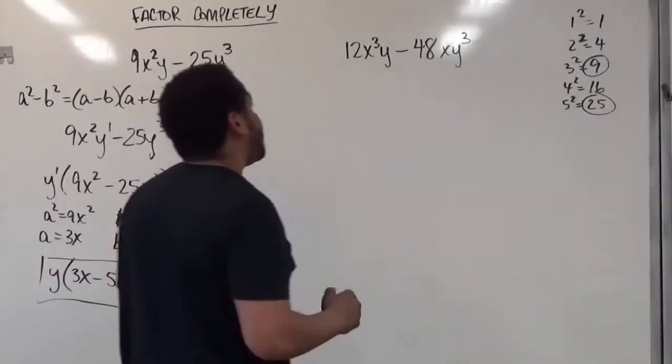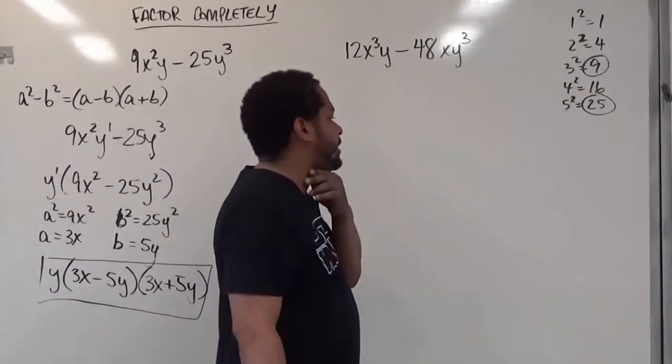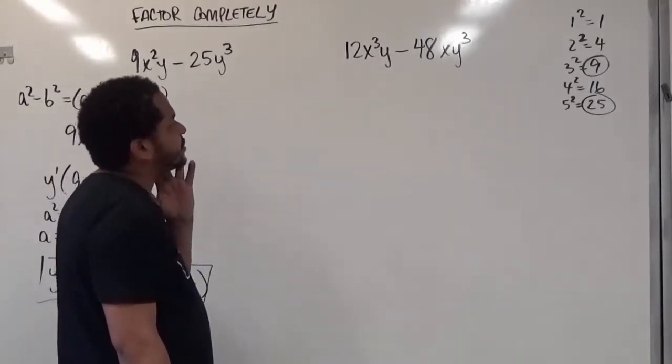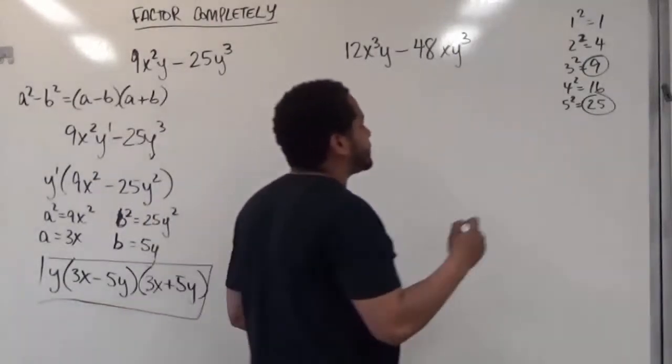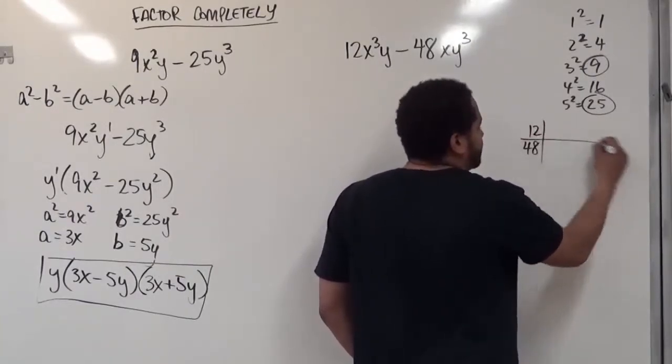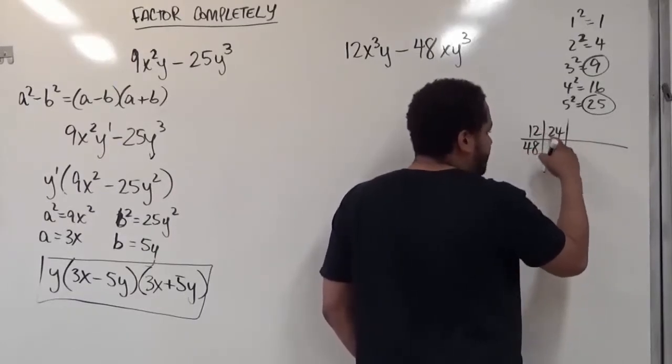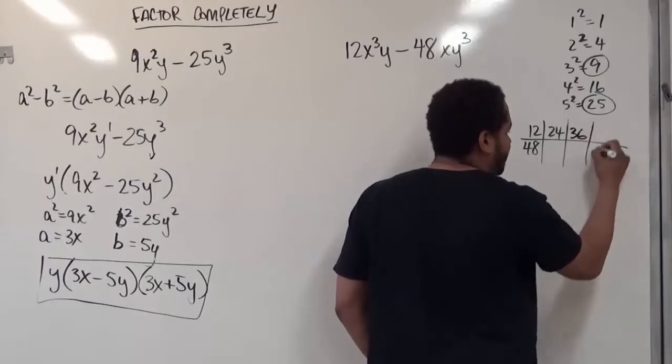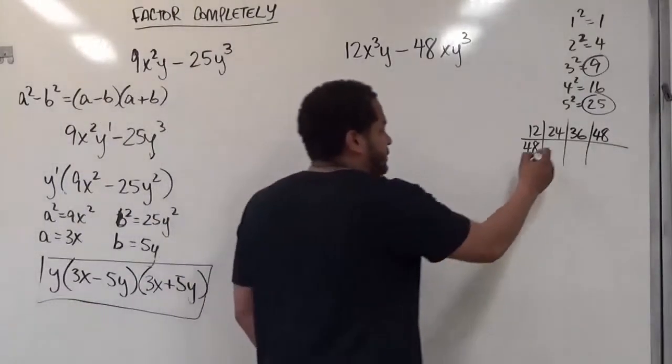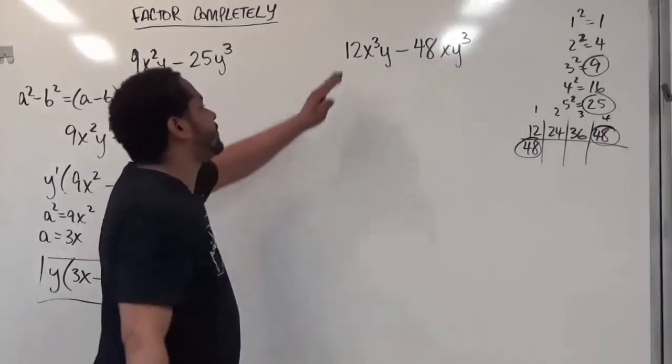My next piece here has both a variable and a number in common. So we're going to first look for the GCF within the numbers. When we look at the numbers, we have to consider what numbers make both 12 and 48, so we can extract the largest of these numbers. When I look at 12, I'm looking for all the numbers 12 makes, as well as 48. 12 by 1 is 12, 12 by 2 is 24, 12 by 3 is 36, and 12 by 4 is 48. So I know they both have 12 in common.